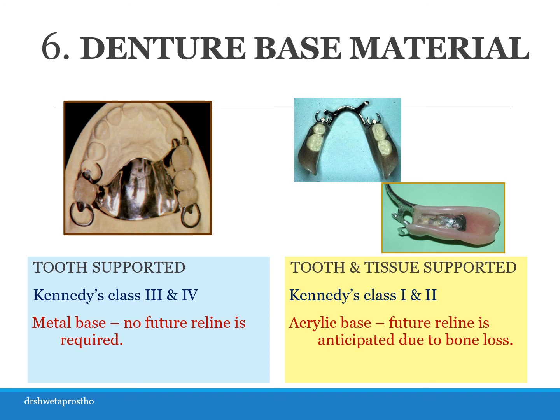Denture base material: for tooth supported RPDs like class 3 and class 4 cases, no future reline is required, so metal bases are preferred. Cobalt chromium or type four gold alloy are used — this is another MCQ question. For tooth tissue supported cases like class 1 and class 2, future reline is anticipated due to bone loss, so acrylic denture bases will be preferred. Despite many disadvantages of acrylic, its main advantage is that it can be relined.